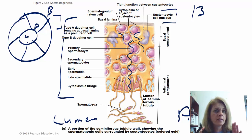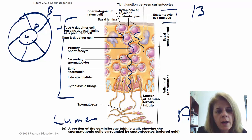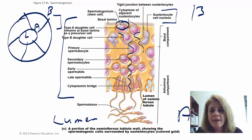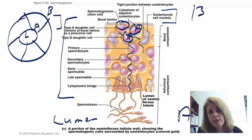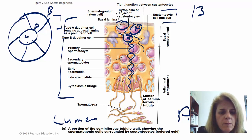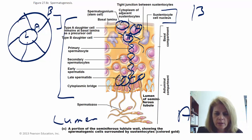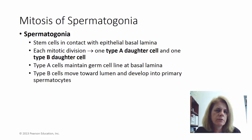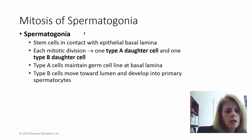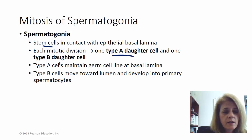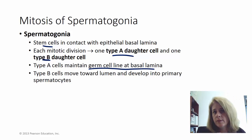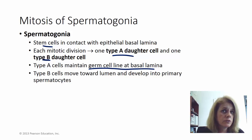The Sertoli cells form the epithelial layer of the seminiferous tubule, and sperm are produced between them. Your stem cell — the spermatogonium — undergoes mitosis to make two copies: cell A and cell B. Cell A stays at the basal lamina and can undergo mitosis again to make more sperm later. Cell B moves toward the lumen and will undergo meiosis to form the actual sperm. This is different from females — men never run out of cells that can become sperm.